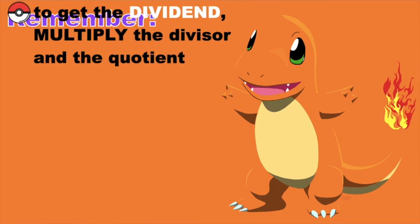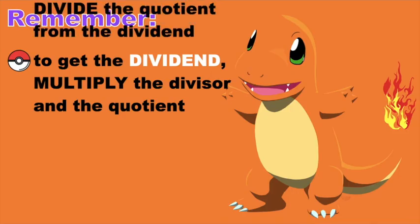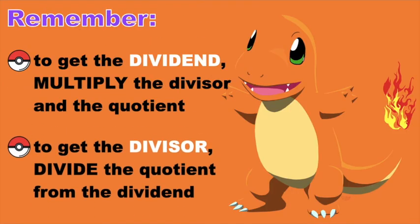So always remember: to get the dividend, all you need to do is to multiply the divisor and the quotient. If you want to get the divisor, just divide the quotient from the dividend.